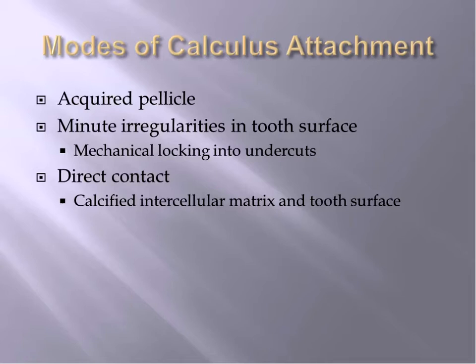The second mode is attachment to minute irregularities in the tooth surface by mechanical locking into undercuts. Enamel irregularities may include cracks, lamellae, and carious defects. Cemental irregularities include tiny spaces at previous locations of Sharpey's fibers, resorption lacunae, scaling grooves and gouges, and cemental tears. It is difficult to be certain that all calculus is removed when it is attached by this method because calculus becomes locked into those irregularities.